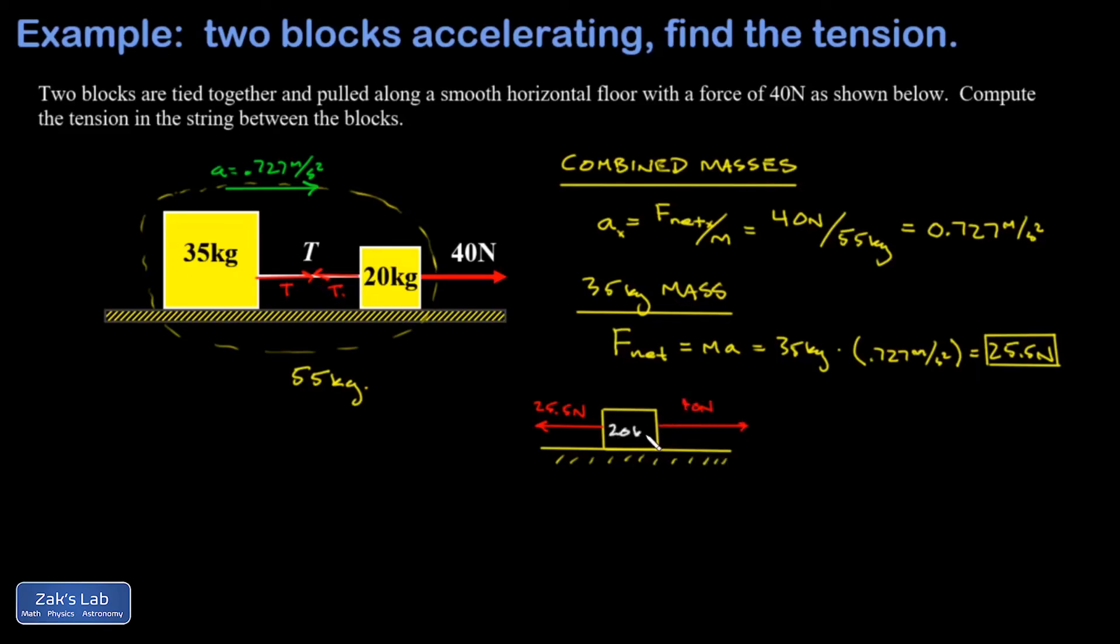The block has a mass of 20 kilograms, and again I apply Newton's second law. So a is going to be F net over m, and my net force using a coordinate system where rightward is positive is 40 newtons minus 25 and a half newtons, and the mass of this block is 20 kilograms.